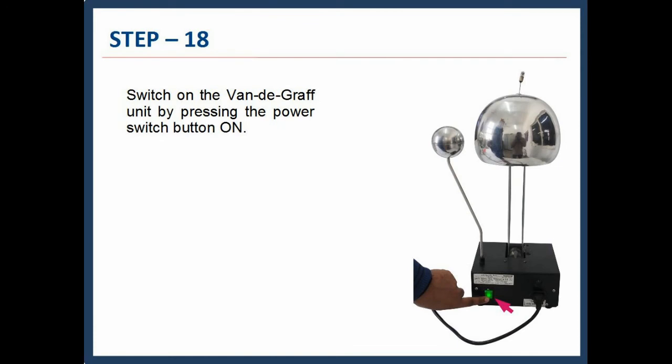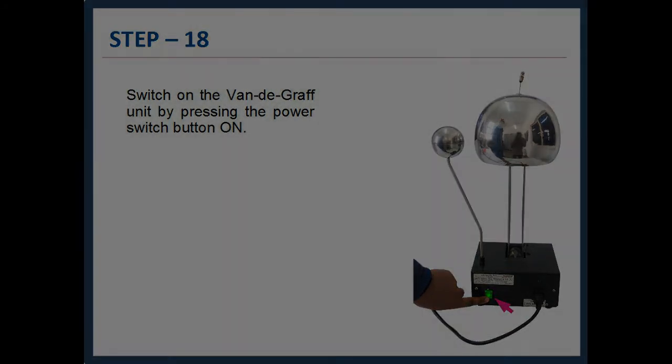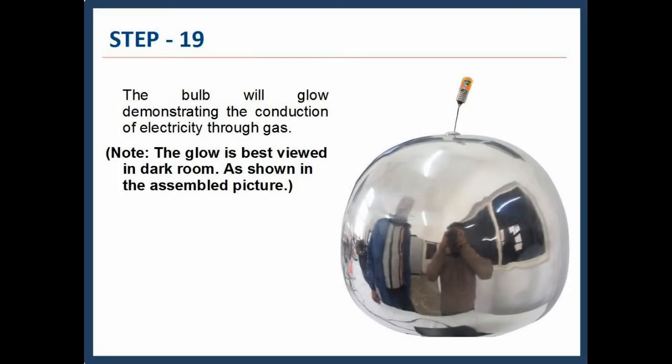Step 18: Switch on the Van de Graaff unit by pressing the power switch button on. Step 19: The bulb will glow demonstrating the conduction of electricity through gas. Note, the glow is best viewed in dark room as shown in the assembled picture.